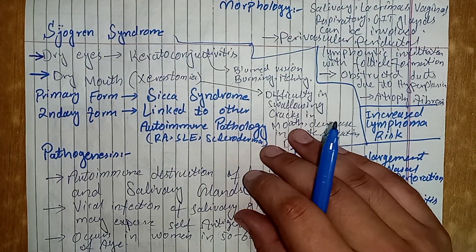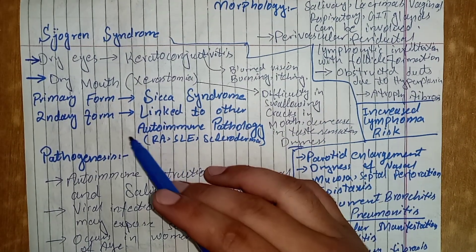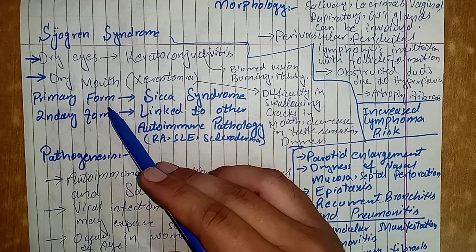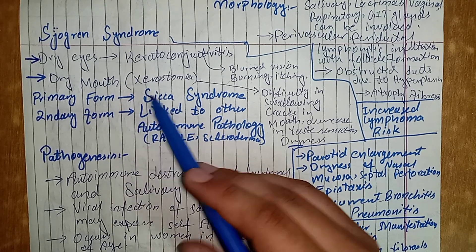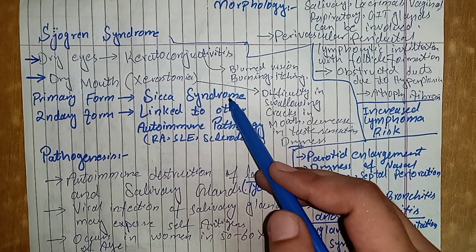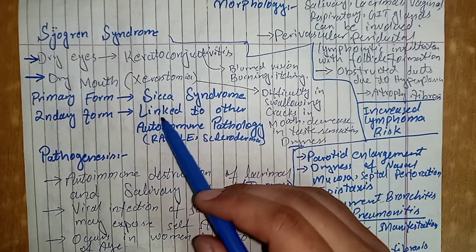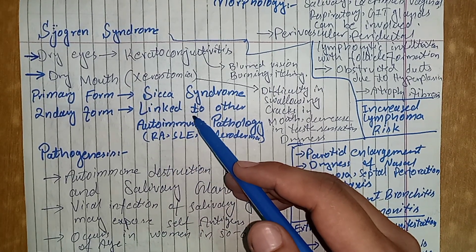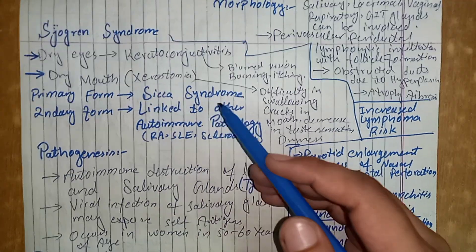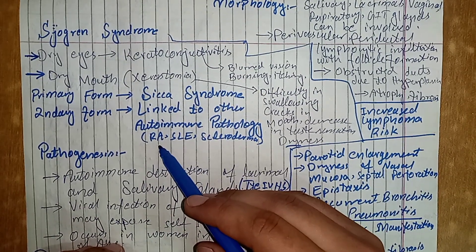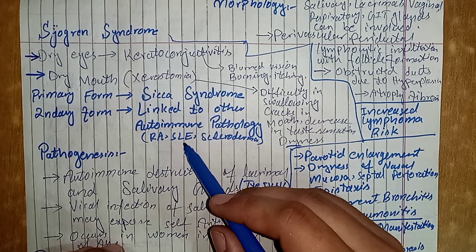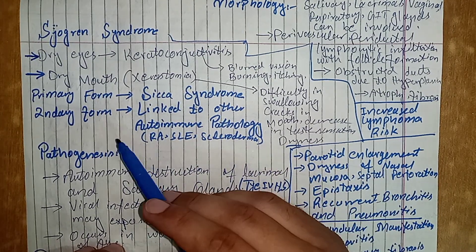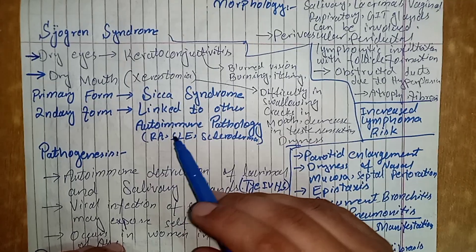Sjogren's syndrome can be primary or secondary. When it is present alone, it is called the primary form, also known as sicca syndrome. However, if it is linked to or present with other autoimmune diseases — which can be rheumatoid arthritis, systemic lupus, or scleroderma — it is called the secondary form.